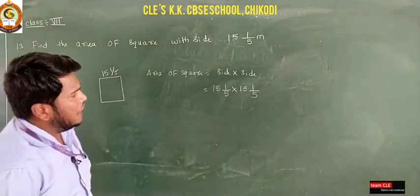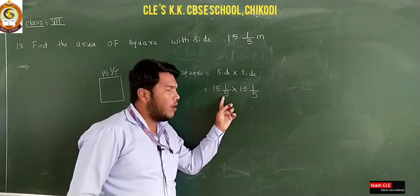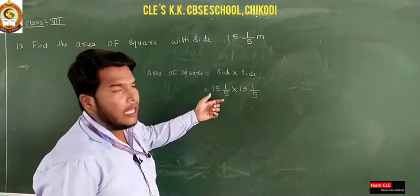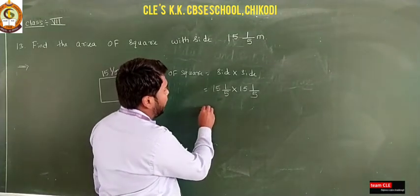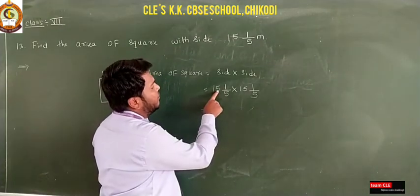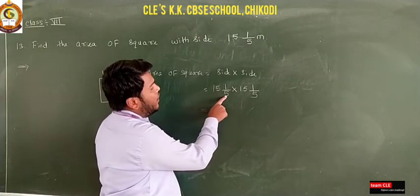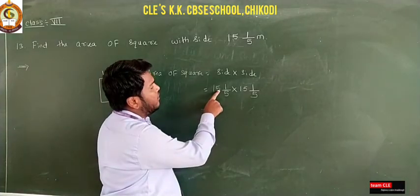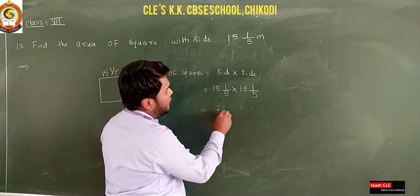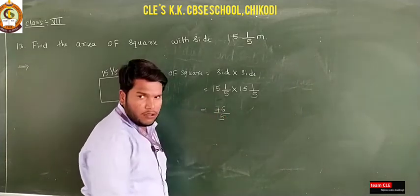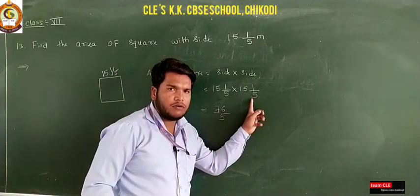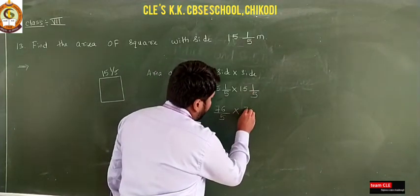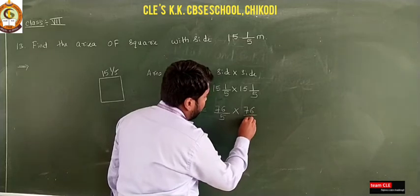We have 15 1/5 × 15 1/5. This is in the form of a mixed fraction, so first you must convert it to an improper fraction. To convert: 15 × 5 = 75, then 75 + 1 = 76, giving us 76/5. Similarly, the second 15 1/5 also becomes 76/5.